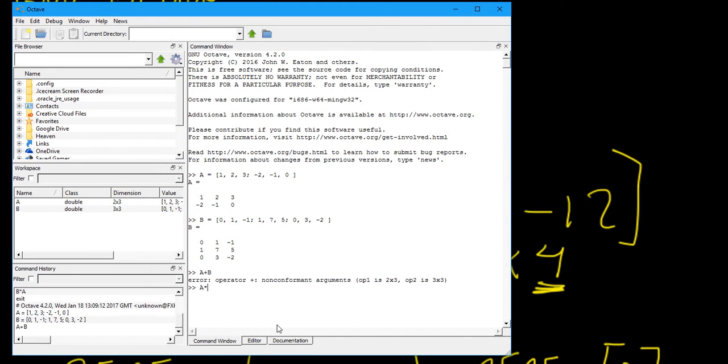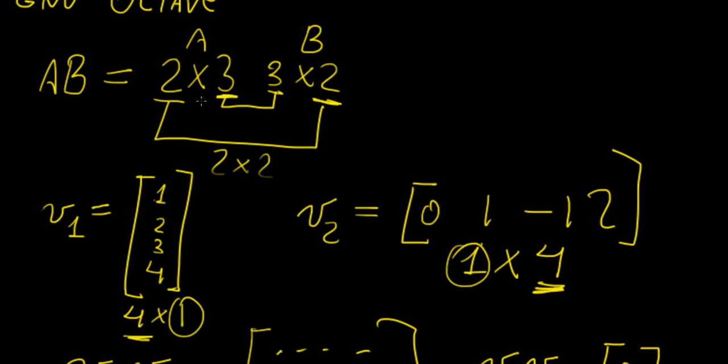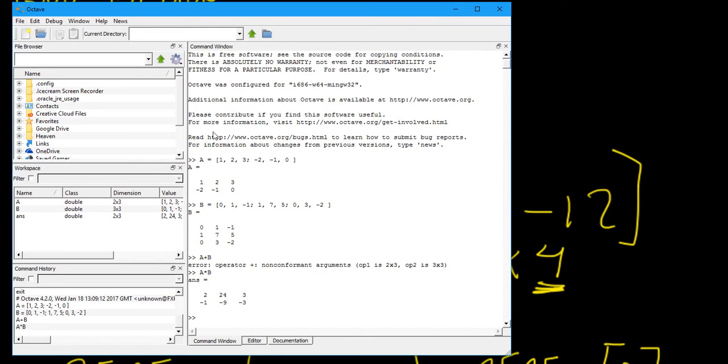Now, how about A times B? So A times B would essentially be denoted by a little asterisk in the middle. Can we perform that operation? Yes, we can. As we have seen, A is a two by three matrix and B is a three by three. And since the dimensions match according to our condition here, then we can perform the operation very easily.